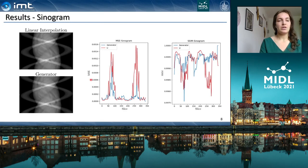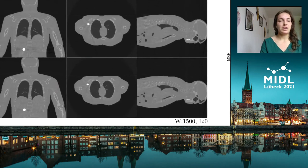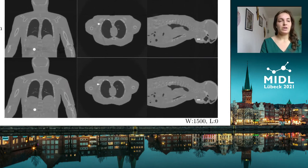Also, if we take a look at the mean squared error and the structural similarity index, we can see that the generator in blue is outperforming the linear interpolation in red. The same applies for the reconstructed images — the generator images have fewer artifacts than the linear interpolation.